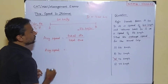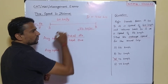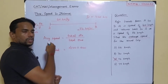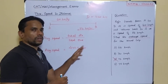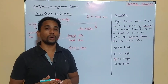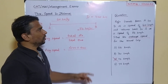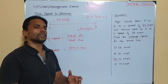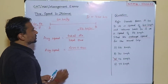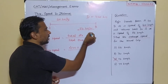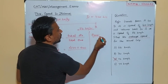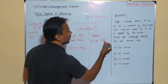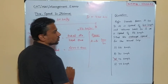Average speed equals total distance divided by total time. Total distance is 420 plus 420, because the person travels from A to B and again B to A — so total distance is 840. Now we calculate the total time taken. Time is distance divided by speed. Time taken from A to B: distance 420 divided by speed 60 equals exactly 7 hours.